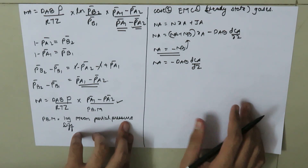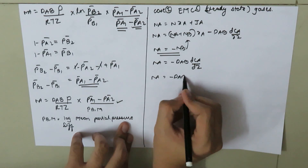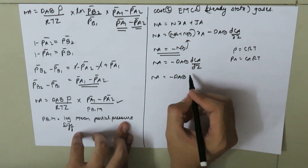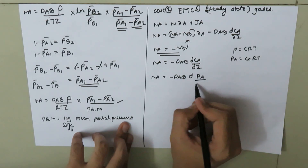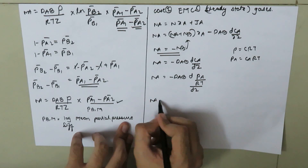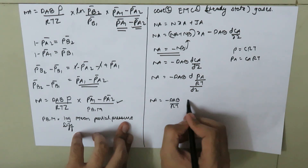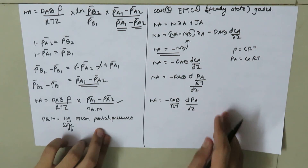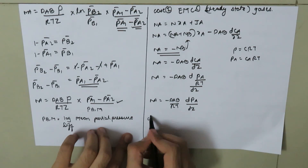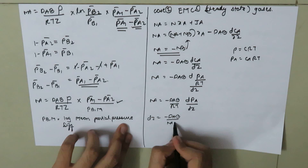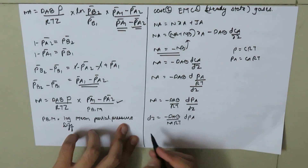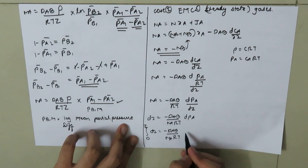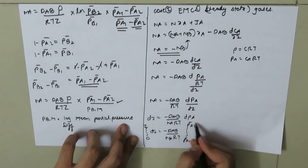For equimolar counter diffusion, N_A plus N_B equals 0, so the equation reduces to: N_A equals negative D_AB times dC_A/dz. Using the ideal gas law, P_A equals C_A times RT, so dC_A equals dP_A / RT. Therefore: N_A equals negative (D_AB / RT) times dP_A/dz. Rearranging and integrating from 0 to Z on the left and P_A1 to P_A2 on the right, we get: Z equals negative (D_AB / (N_A times RT)) times (P_A2 minus P_A1).